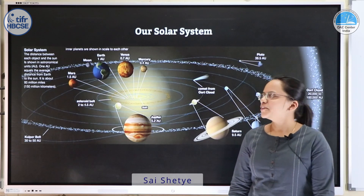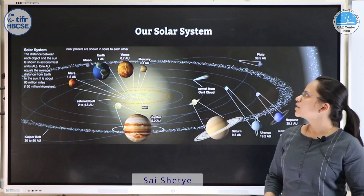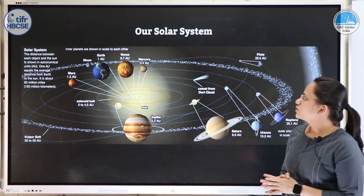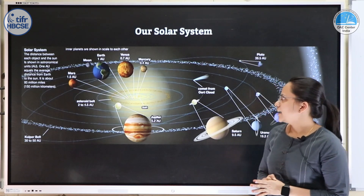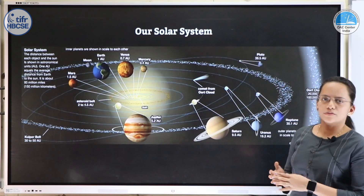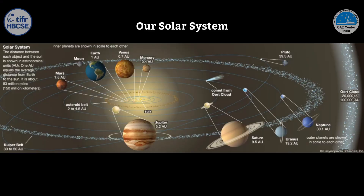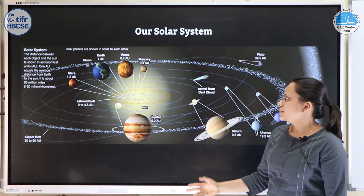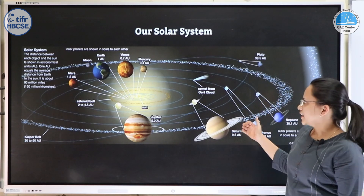Hello everyone, I am Sai and today we are going to talk about the scales in the solar system. First we will look at an all-inclusive picture of our solar system. We obviously have our sun which is the only star at the center, then we have all the planets, we have an asteroid belt, we have a Kuiper belt, and we have some minor bodies like dwarf planets.